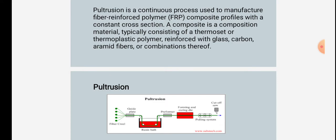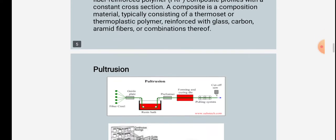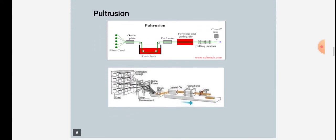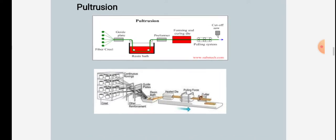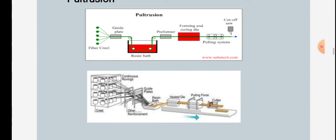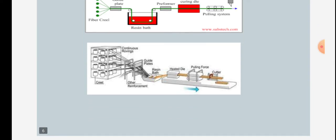The pultrusion process is shown in a figure which includes a guide plate, fiber creel, resin bath, preforming and curing die, cooling system, and cut-off saw. Continuous reinforcement is fed through guide plates and the resin bath.